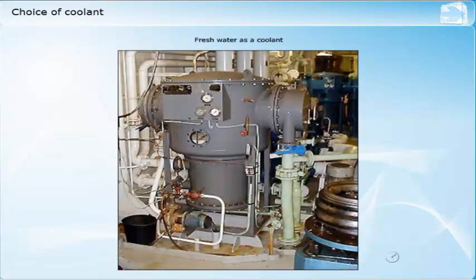Fresh water meets all of the requirements for a coolant. However, it is not readily available and has to be stored or produced on board. The specific heat capacity is approximately 4.2 kJ per kg Kelvin, which gives a very good cooling effect. When produced on board by a fresh water generating plant, the water is almost pure.